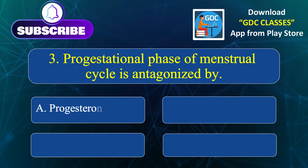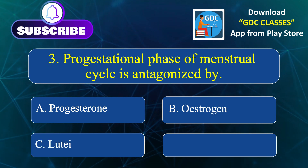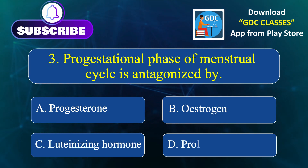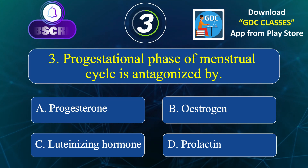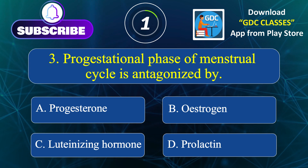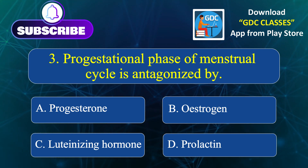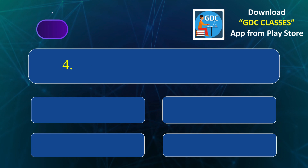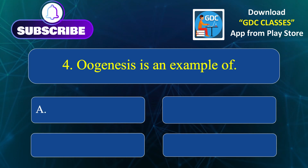Progestational phase of the menstrual cycle is antagonized by: Option A. Progesterone, Option B. Estrogen, Option C. Luteinizing hormone, Option D. Prolactin. Correct answer is Option B: Estrogen.